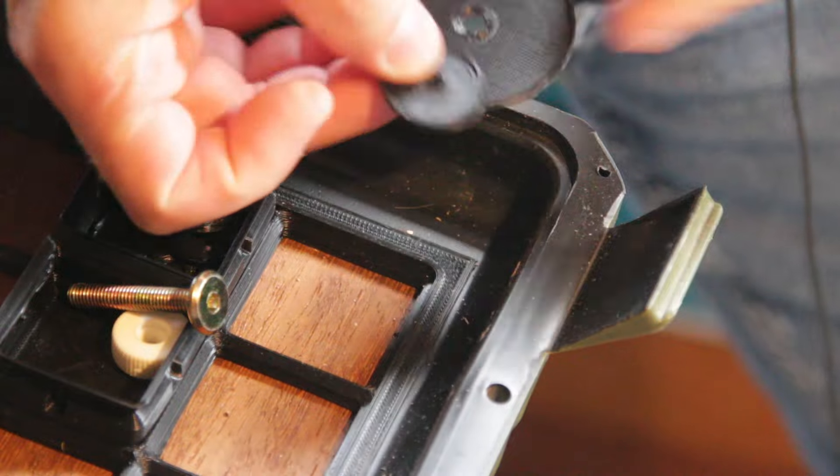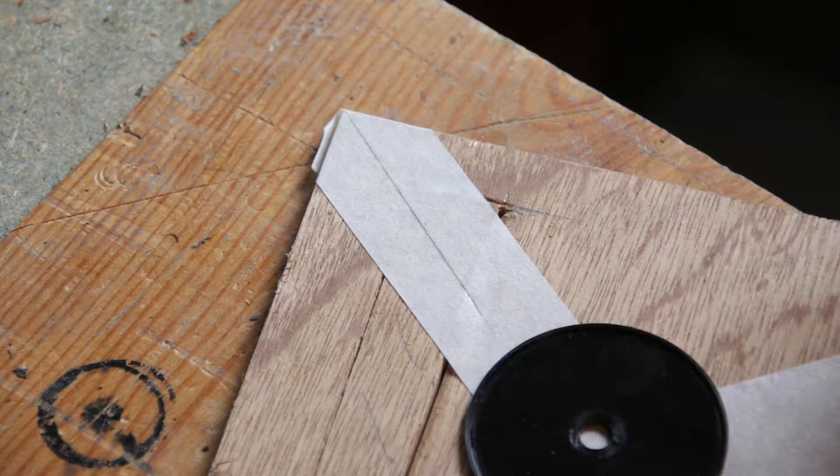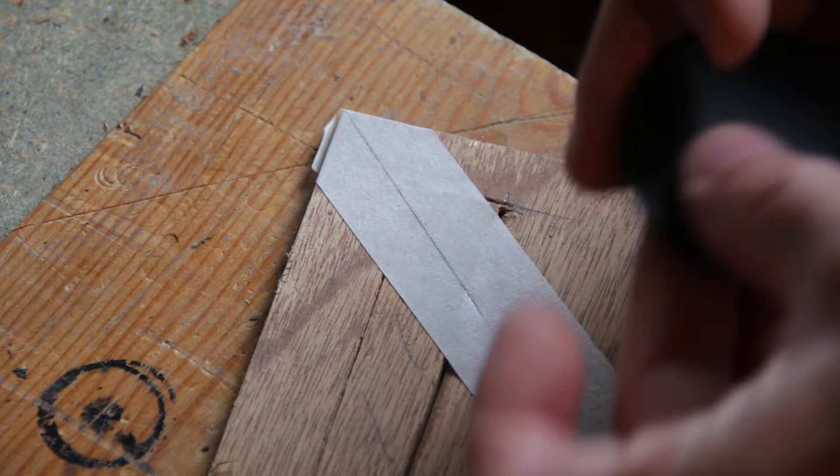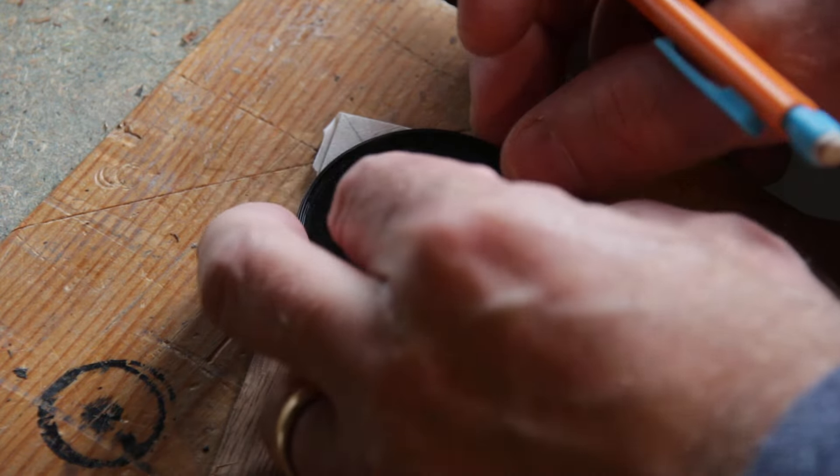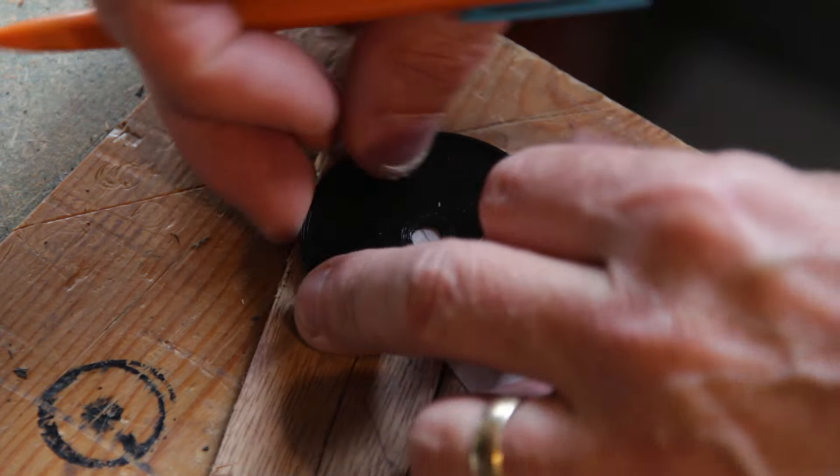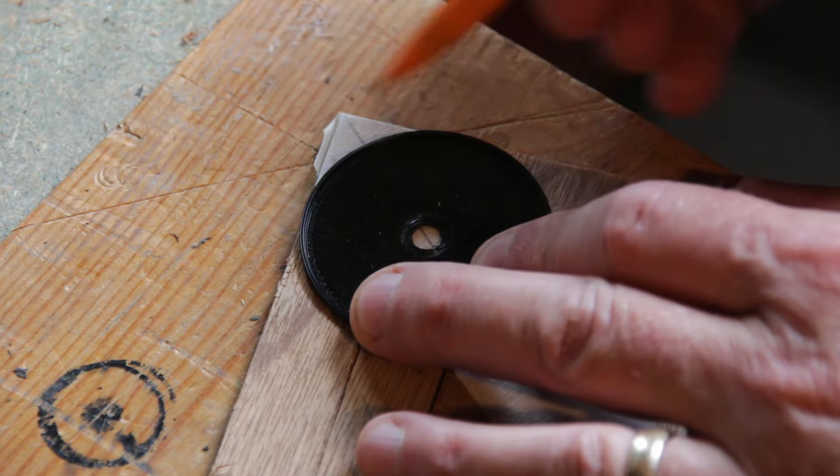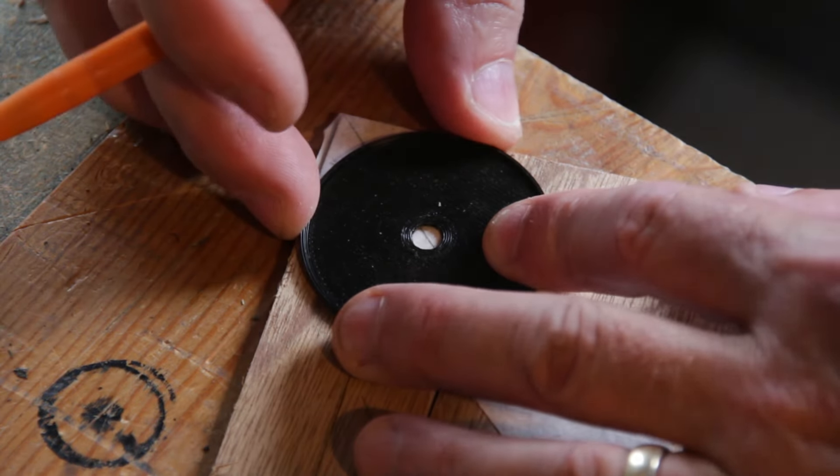So I'll put both of those aside and I can use these two now as my radius template. So when I'm drawing where I need to cut, to draw this I literally just need to offer it up to the piece, make sure that it's on the edges.